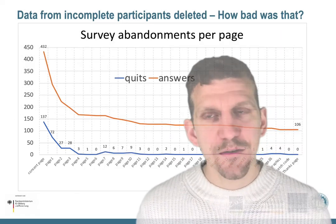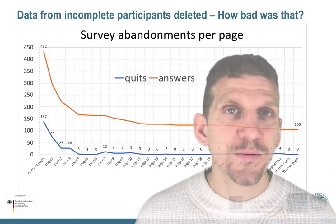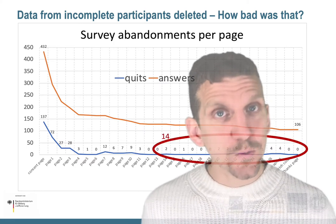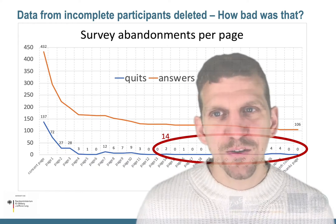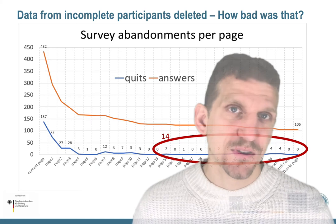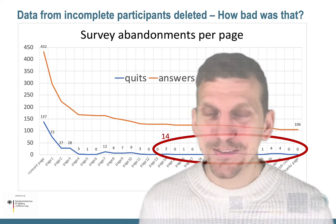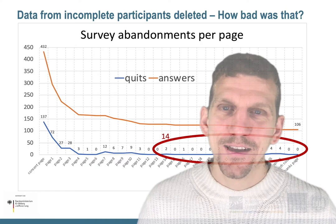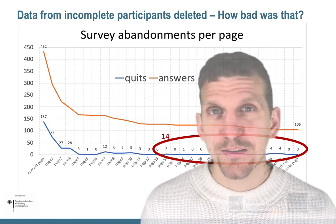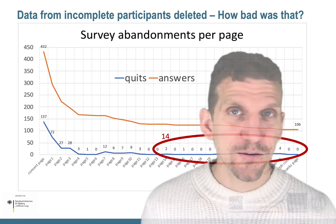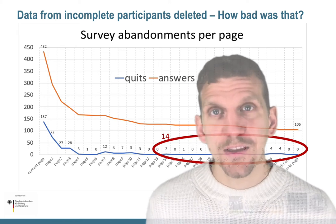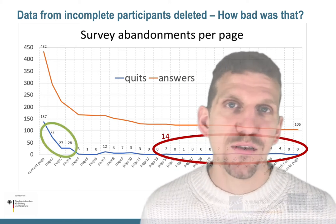The really valuable data for concept inventory development is the data beyond 50% completion — data that you could impute — so that's actually not that much. All in all, counting from page 13, there were just 14 participants I lost. It's still a pain, but it's passed.